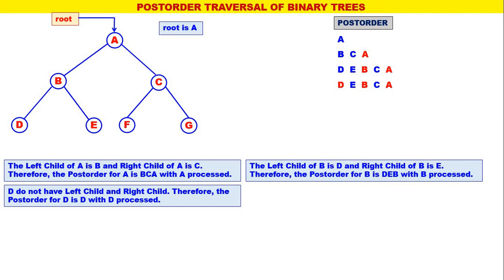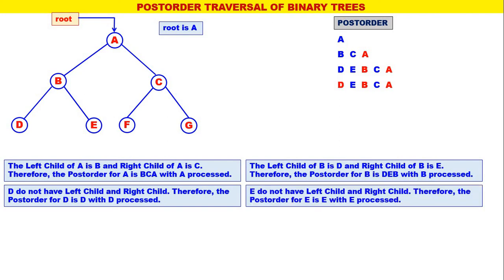Next, the leftmost is E. E does not have a left child or right child. Therefore, the post-order for E is E only, with E processed. Therefore, blue E is replaced by red E.